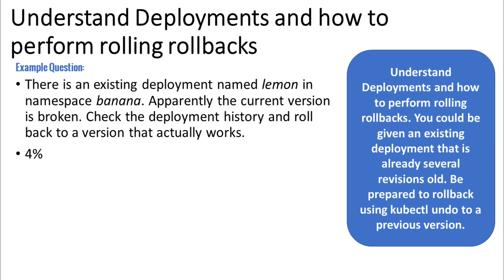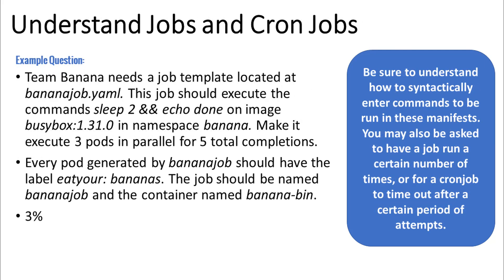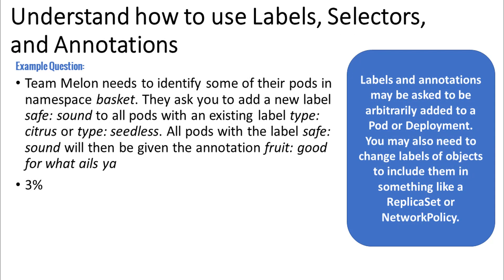Understand deployments and how to perform rolling rollbacks. You may be given an existing deployment that is already several revisions old — be prepared to roll back using kubectl rollout undo to a previous version. Understand jobs and cron jobs: be sure to understand how to syntactically enter commands to be run in these manifests. You may also be asked to have a job run a certain number of times, or for a cron job to time out after a certain period of attempts. Understand how to use labels, selectors, and annotations — labels and annotations may be asked to be arbitrarily added to a pod or deployment. You may also need to change labels of certain objects in order to include them in something like a replica set or a network policy.